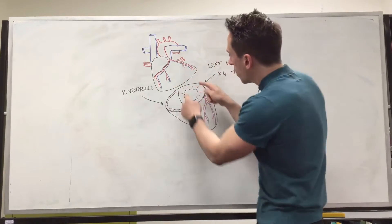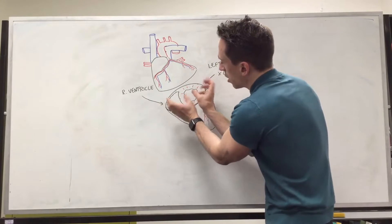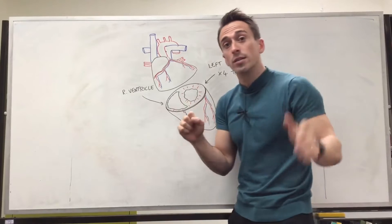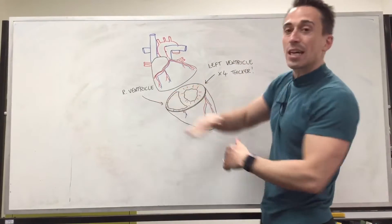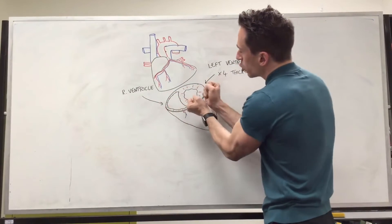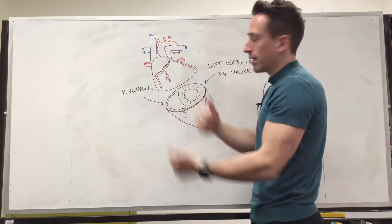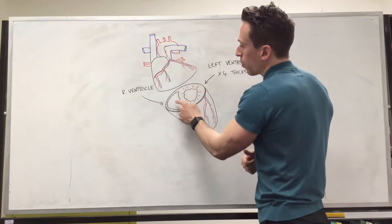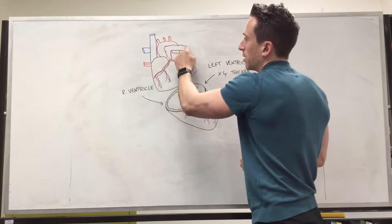When they contract, or I should say when the myocardium that surrounds these hollow chambers contracts. So there's the left ventricle, there's the right ventricle. You can see I've performed a transverse section through this heart. When they contract, they push blood out of the heart. Now the left ventricle pushes that blood out via the aorta, and the right ventricle pushes that blood out via the pulmonary arteries.